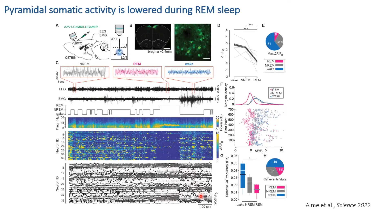Raw traces confirm that calcium transients — calcium peaks — decrease in frequency during REM sleep compared to other states. Quantification across several mice shows a significant decrease during REM sleep compared to wakefulness and non-REM. We calculated the frequency of all detected calcium spikes and found that during REM sleep only 18% of all detected calcium spikes occurred, confirming that principal neurons in the prefrontal cortex decrease their activity during REM.